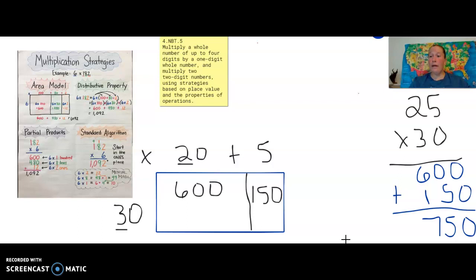Now, if you notice, 750 is 10 times greater than 75. All we did was tack that zero on. So guess what? If we did 300 times 25, guess what we would get? 7,500. It's going to get 10 times bigger each time.